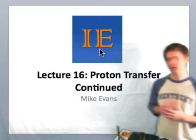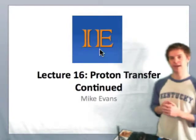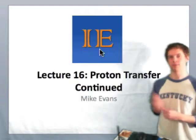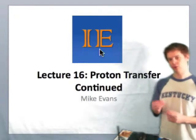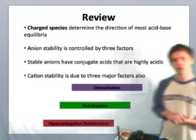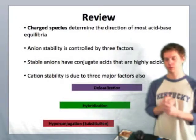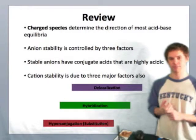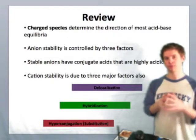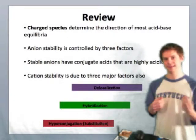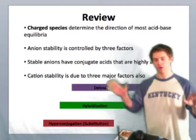Today we're going to be continuing our discussion of proton transfer, which we'll remember last time we defined as the movement of a proton — a positively charged particle in the nucleus — from one atom to another. To review: charged species determine the equilibrium of acid-base reactions. More stable charged species are the ones that dictate the position where equilibrium will lie, whether it be on the left or right-hand side.